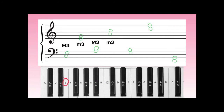Now we have an E in the bass clef — up one, two, three half-steps — that's another minor third. Next we see a D that goes up one, two, three half-steps to an F — that's a minor third.